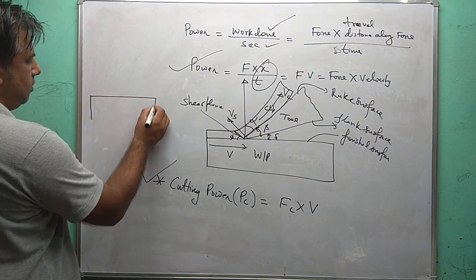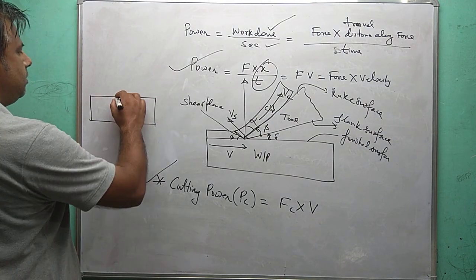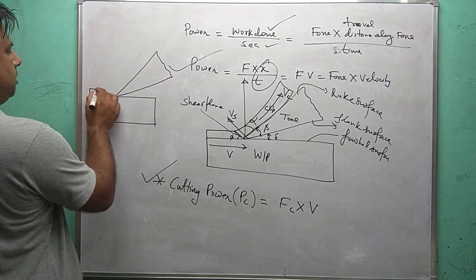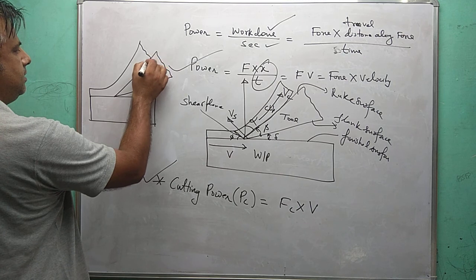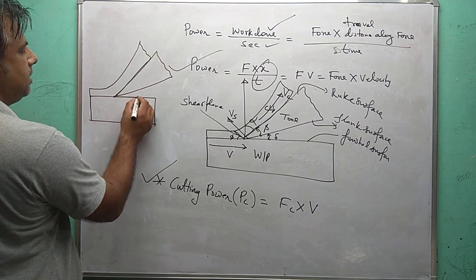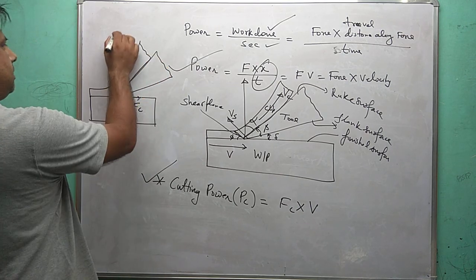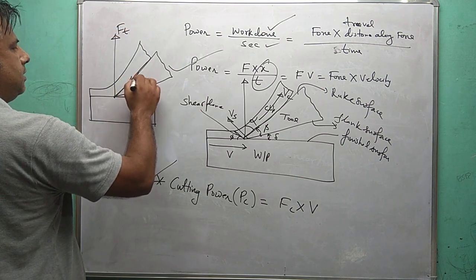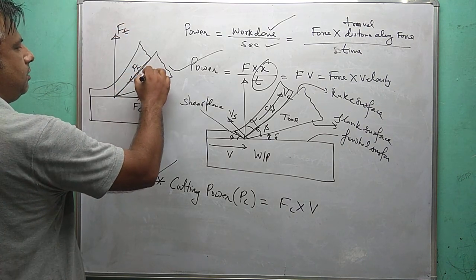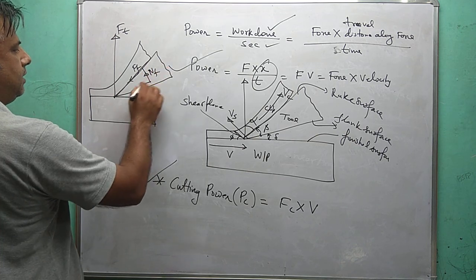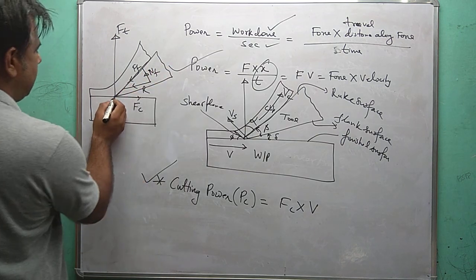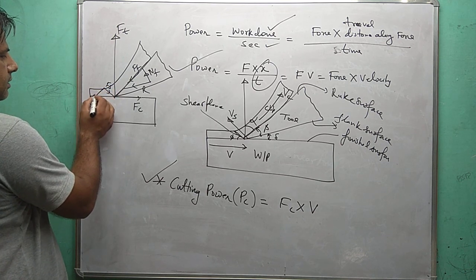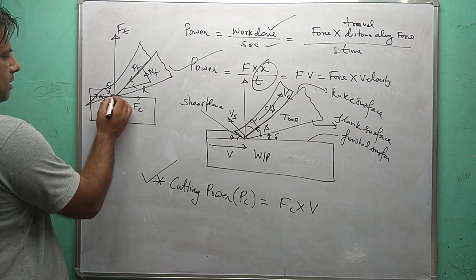This is the workpiece and here is the single point cutting tool, with thin zone deformation. Here is the cutting force Fc, the thrust force Ft, the frictional force Ff, the normal frictional force NF, and the resultant force R. Similarly at the shear plane, we have Fs, NF, and the resultant force R.